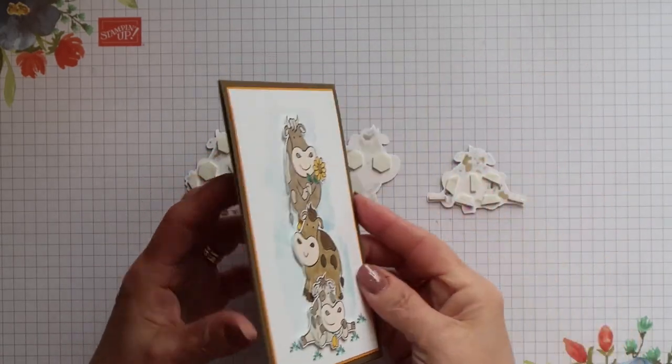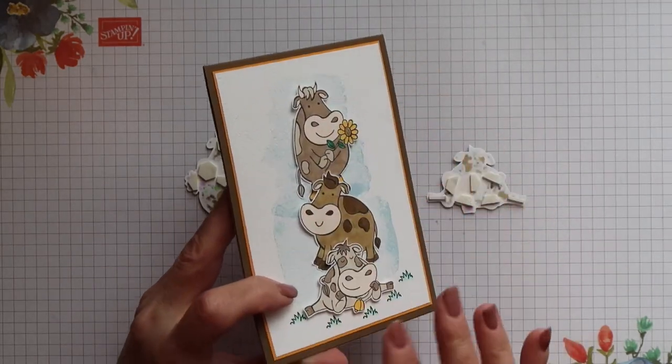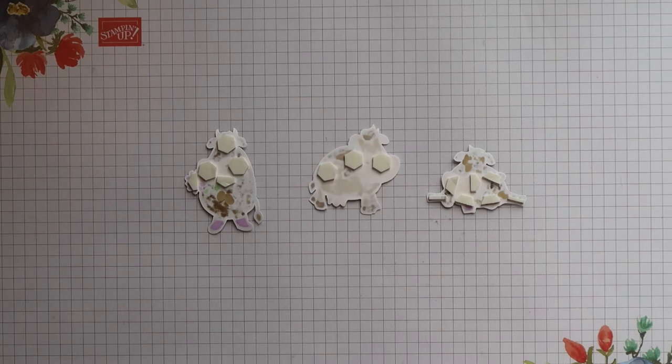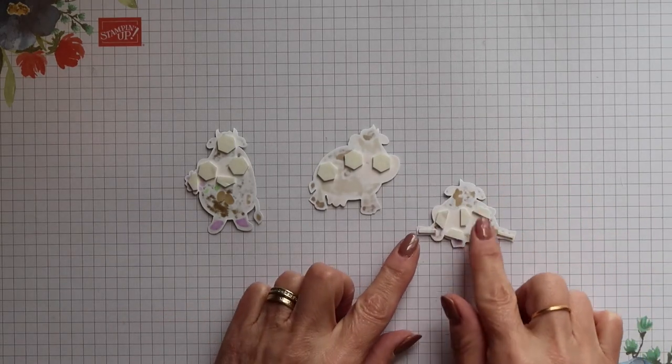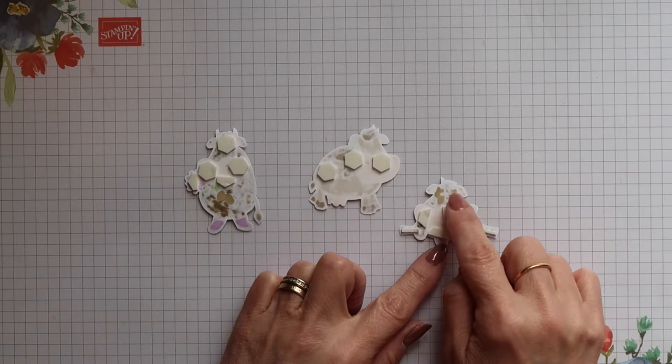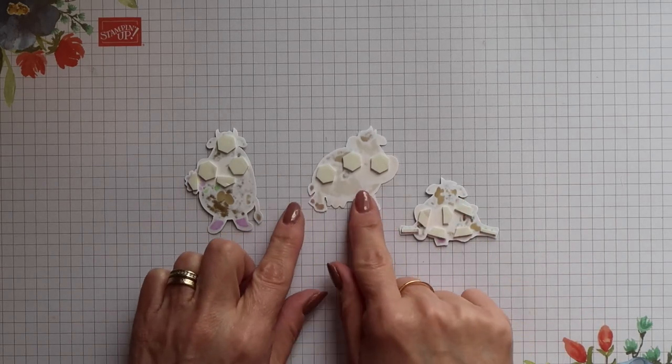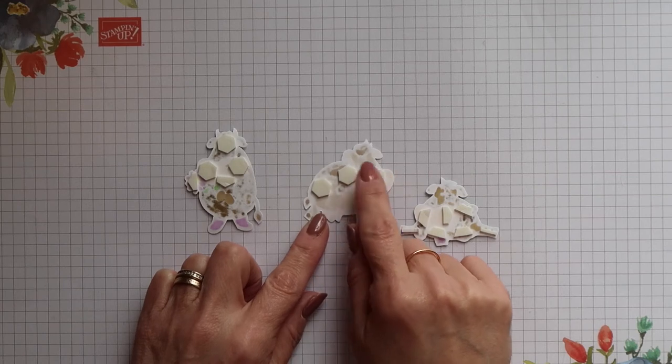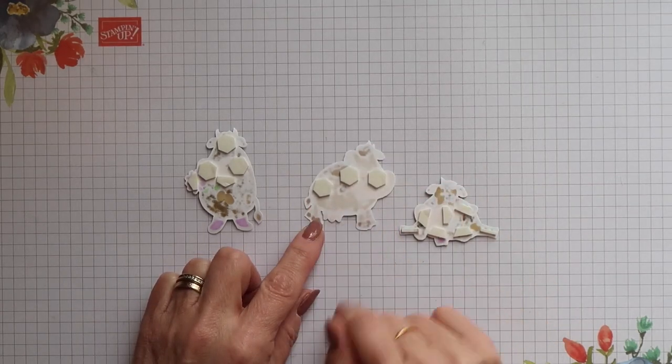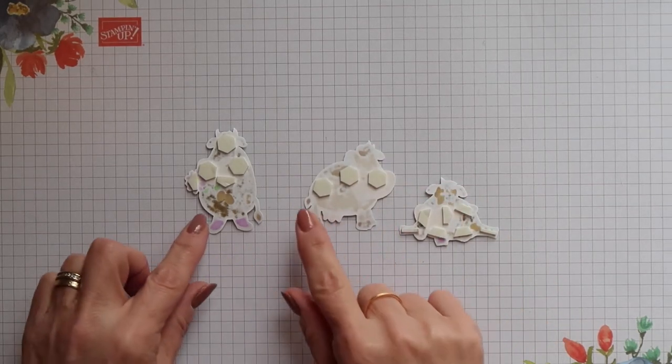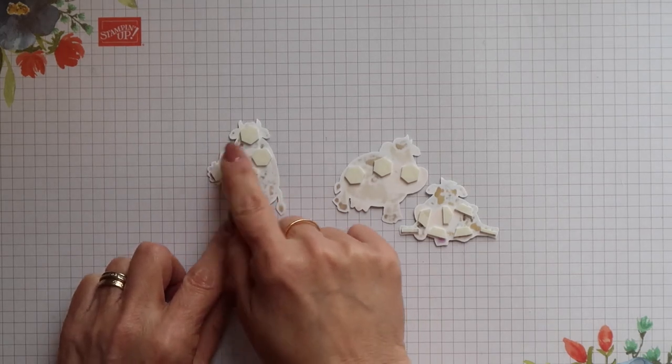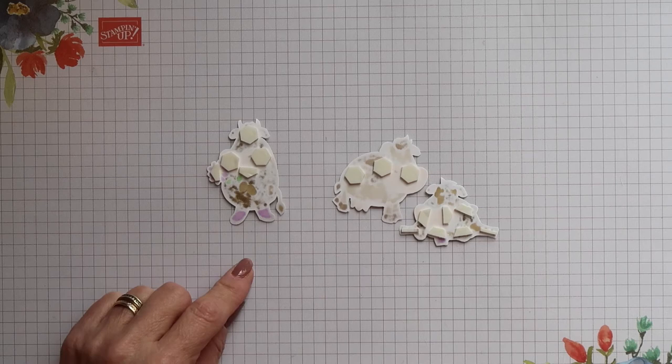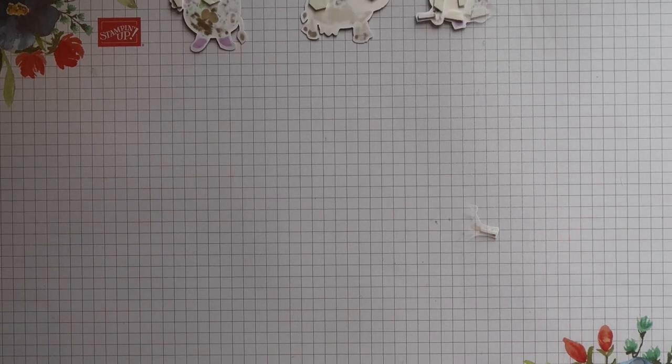Where the bottom two cows overlap I haven't added a dimensional behind the head. Now for this first cow I've covered it with dimensionals apart from the head so it's just missing that one. The second cow I've avoided the top of the head then I have a row of dimensionals and the bottom part is going to be glued flat. And then for the top cow you can put dimensionals all over the top half but leave the bottom half free for the glue.